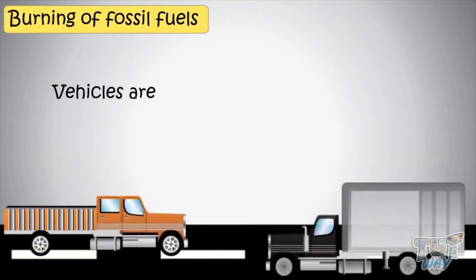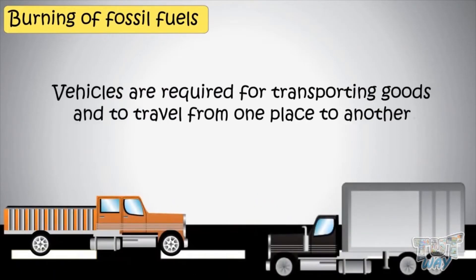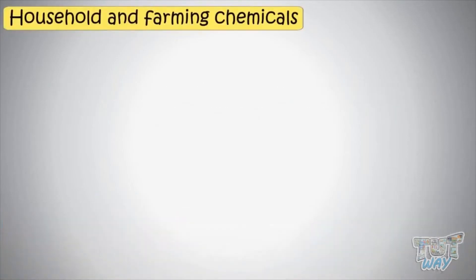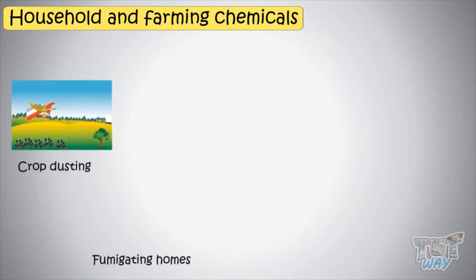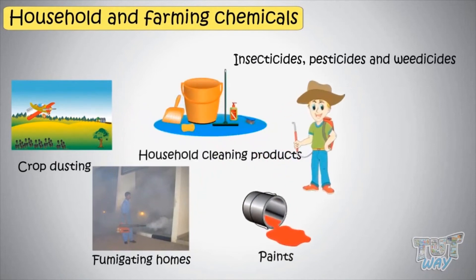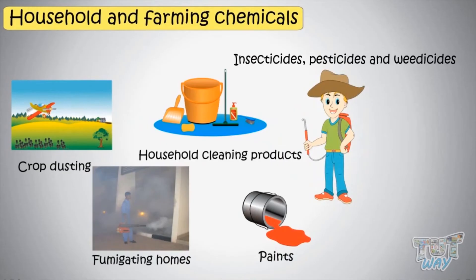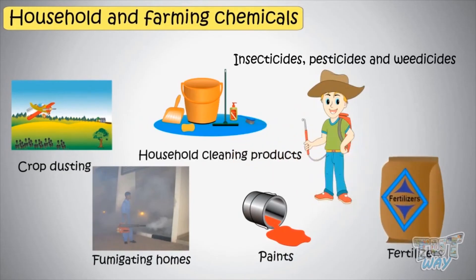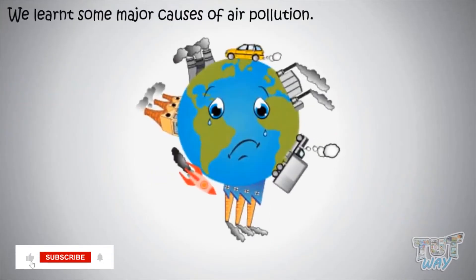Vehicles are required for transporting goods and to travel from one place to another. Household and farming chemicals — crop dusting, fumigating homes, household cleaning products, painting supplies, insecticides, weedicides, and fertilizers — all emit harmful substances into the air and cause some kind of pollution.